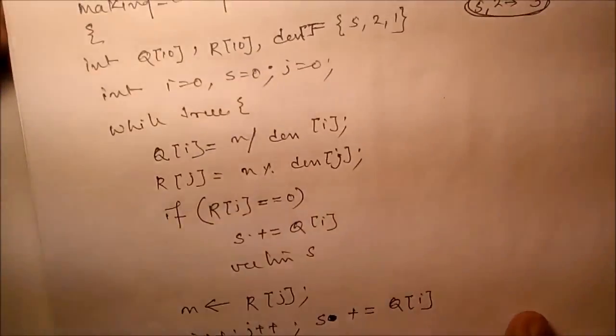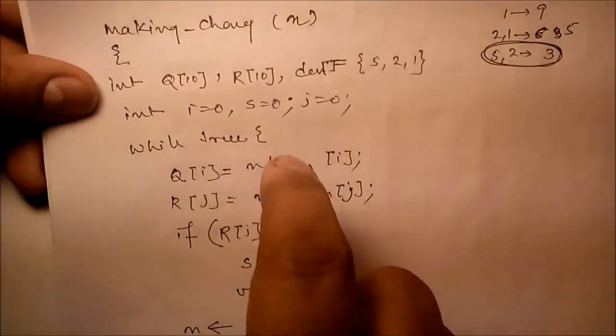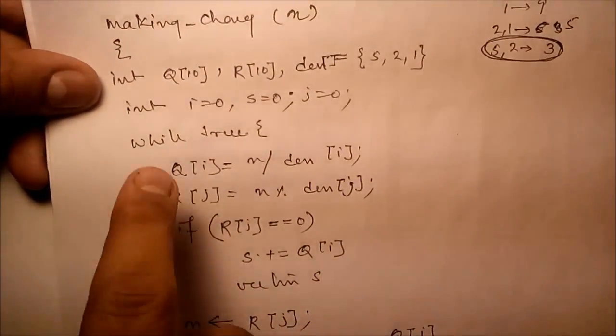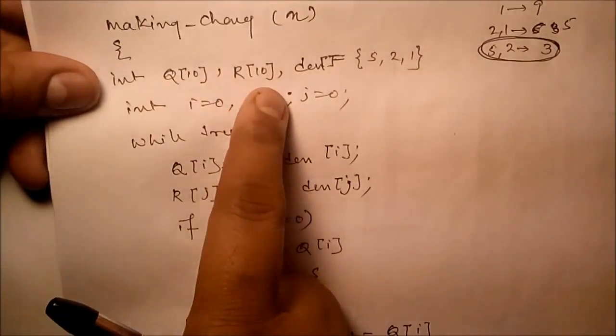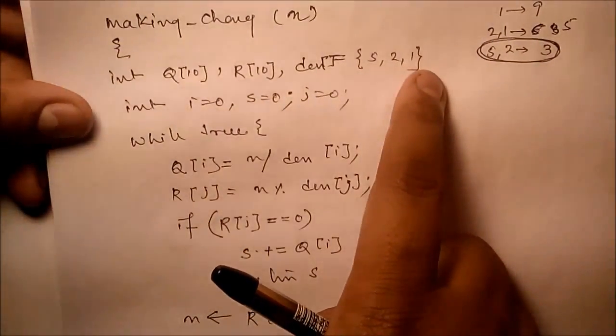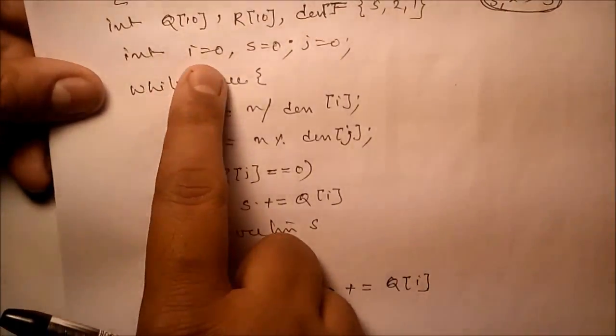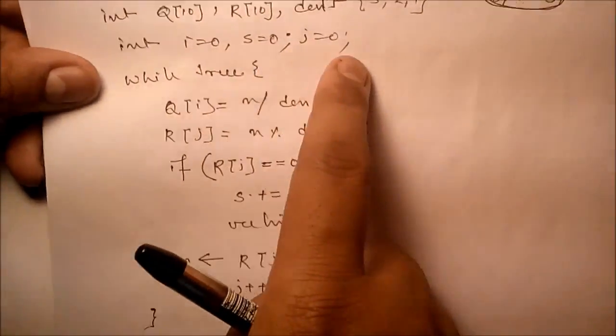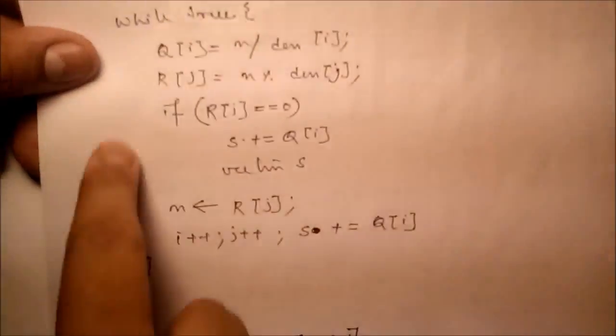So we may apply the making change algorithm for that. You can see this particular algorithm: Q equals n, R equals n, and we have the possible denominations 5, 2, 1. Three variables: i equals 0, s equals 0, z equals 0. While true - it is an infinite loop.